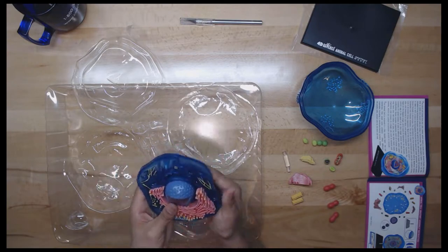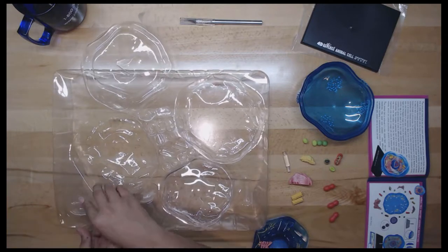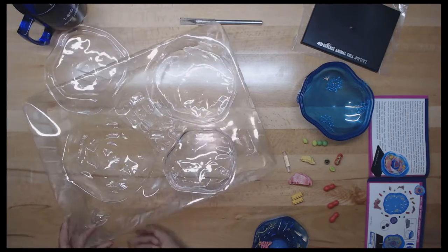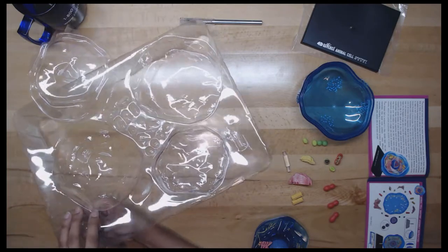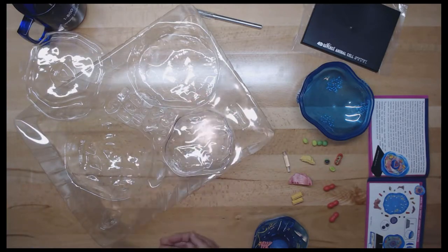Next, we have the rough endoplasmic reticulum. It appears pebbled due to numerous ribosomes on its surface. Proteins synthesized on these ribosomes are collected in the endoplasmic reticulum for transport throughout the cell.